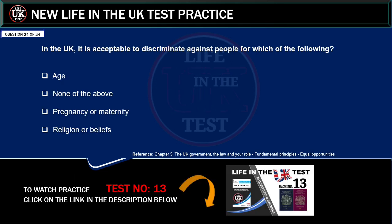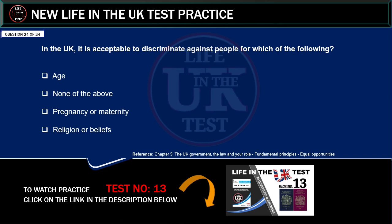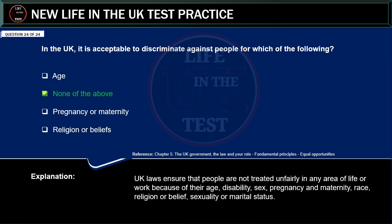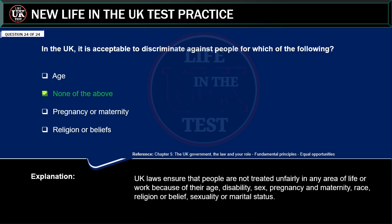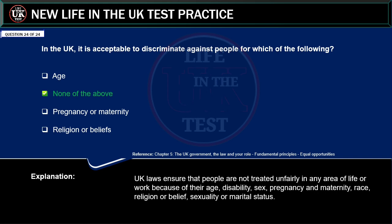In the UK, it is acceptable to discriminate against people for which of the following? Age. None of the above. Pregnancy or maternity. Religion or beliefs. Correct answer: none of the above. Explanation: UK laws ensure that people are not treated unfairly in any area of life or work because of their age, disability, sex, pregnancy and maternity, race, religion or belief, sexuality or marital status.